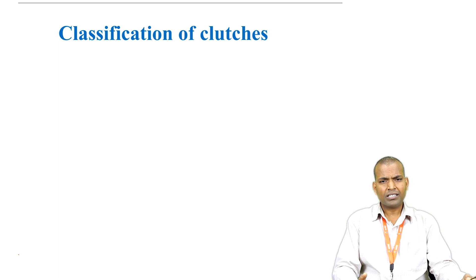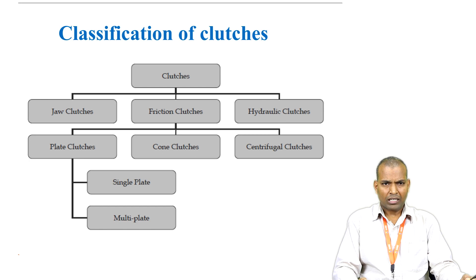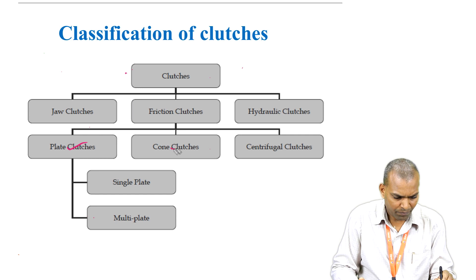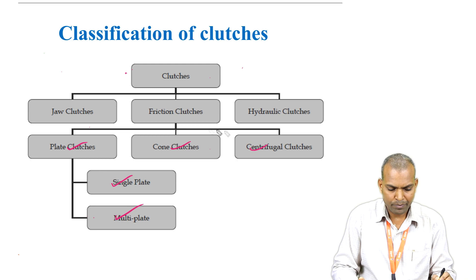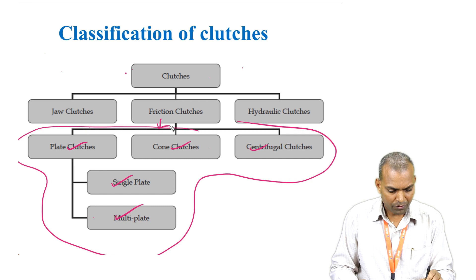The commonly used friction materials are wood, cork, leather, asbestos-based friction materials, and powdered metal friction materials. Clutches are broadly classified into three categories based on friction and geometry, and based on whether they are hydraulically or pneumatically operated. The three types are jaw clutches, friction clutches, and hydraulic clutches. Five clutches will be covered: plate clutches, cone clutches, centrifugal clutches, single plate, and multi-plate — all based on the principle of friction.